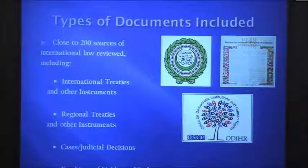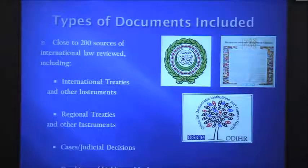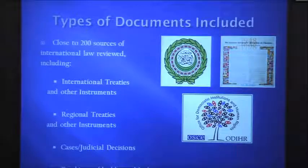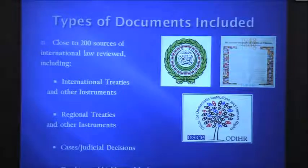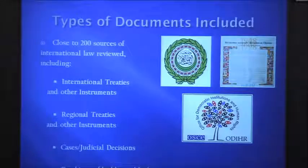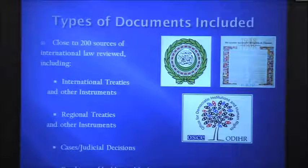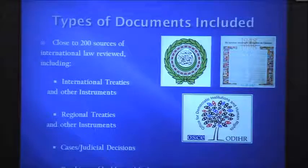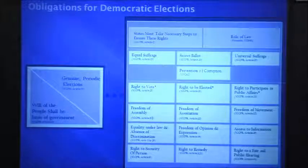We worked with a small team inside the Carter Center and several outside experts. We've reviewed more than 200 sources in the database we built, including international treaties and conventions, regional treaties and conventions, and judicial decisions — particularly important are the treaty bodies that interpret conventions themselves. The ICCPR and all the general statements produced by the Human Rights Committee are really important sources of international obligations. We've also looked at the teachings of highly qualified publicists, handbooks of observer organizations, and other documents that evidence an increasing pattern of state practice reinforcing public international law.